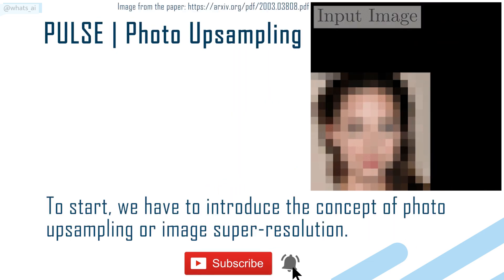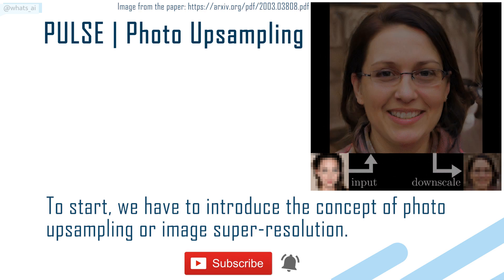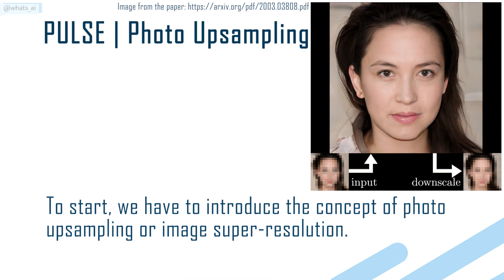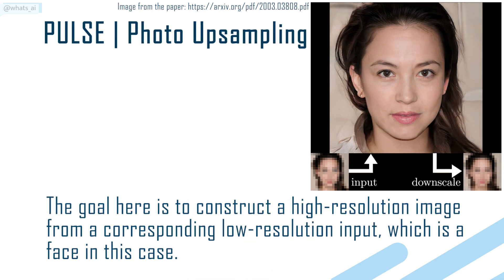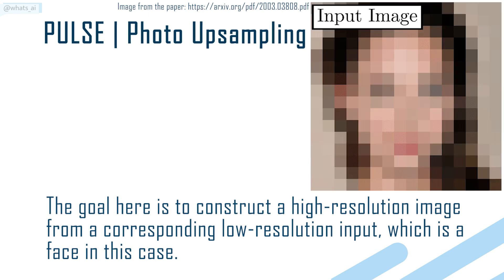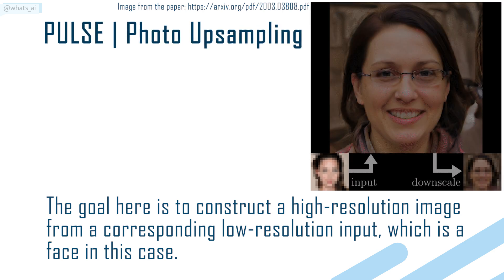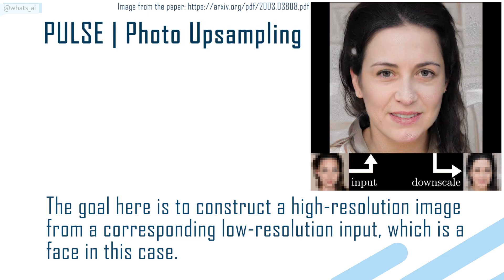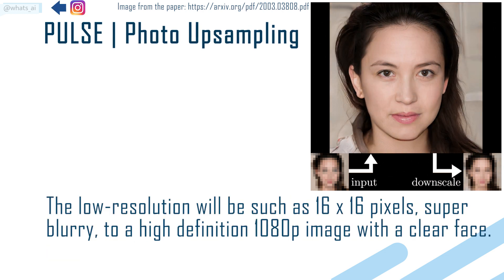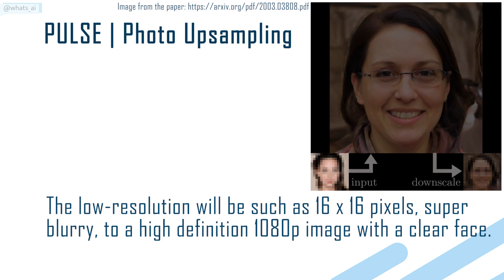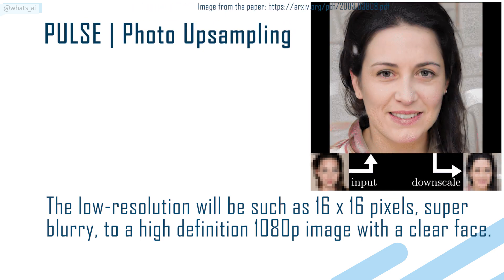To start, we have to introduce the concept of photo upsampling, or image super resolution. The goal here is to construct a high-resolution image from a corresponding low-resolution input, which is a face in this case. The low resolution will be such as 16x16 pixels, super blurry, to a high-definition 1080p image with a clear face.